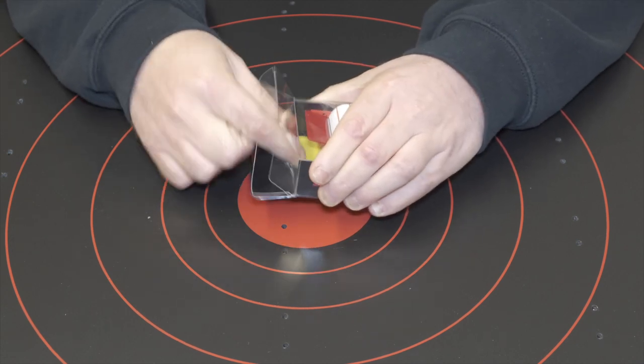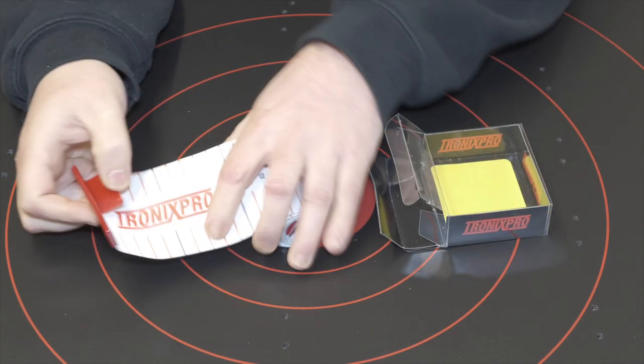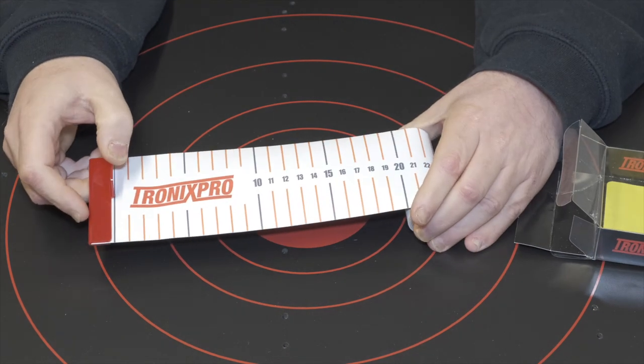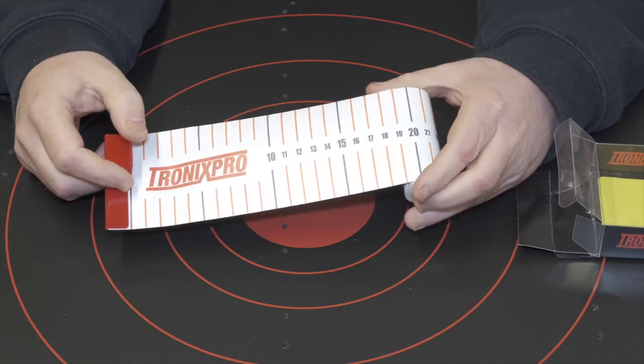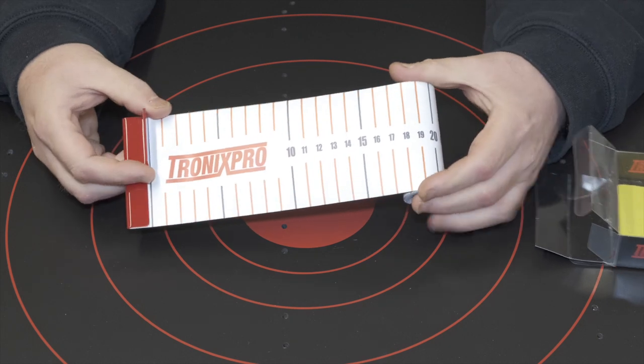It can fold up under the fish, so obviously it's not going to measure the fish accurately. But for the specimen hunters, the big fish anglers, these kind of rulers are perfect.